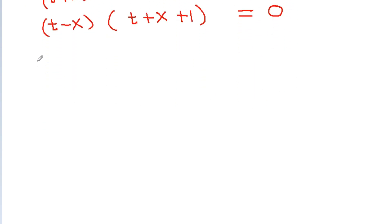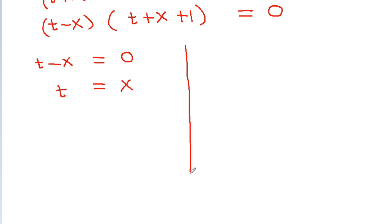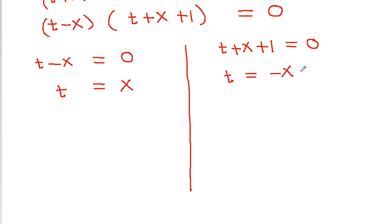Taking t minus x as a common factor gives (t minus x)(t plus x plus 1) equals 0. So either t minus x equals 0, meaning t equals x, or t plus x plus 1 equals 0, meaning t equals minus x minus 1.